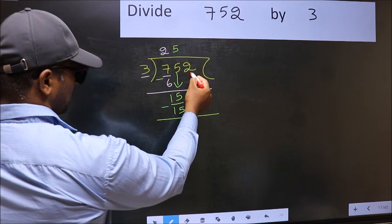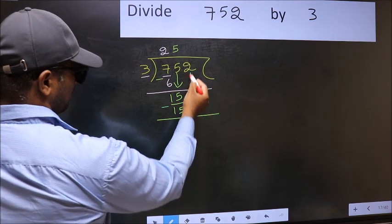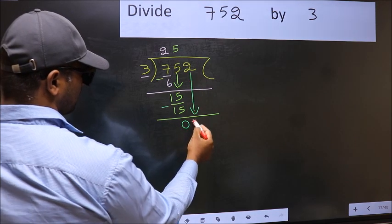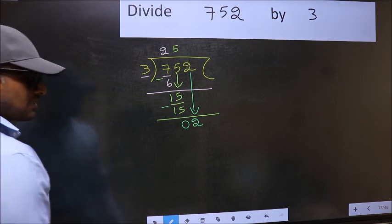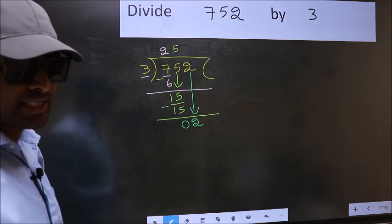After this, bring down the beside number. So, 2 down. Mistake happens after this step. What is the mistake?